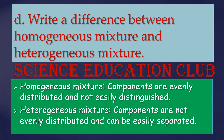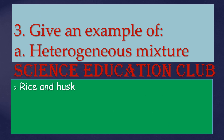Write a difference between homogeneous mixture and heterogeneous mixture. In a heterogeneous mixture, the components are not uniformly distributed and can be easily distinguished from one another. Give an example of a heterogeneous mixture: rice and husk.